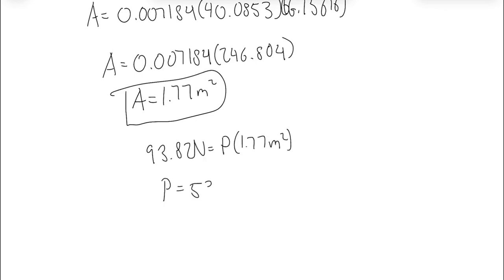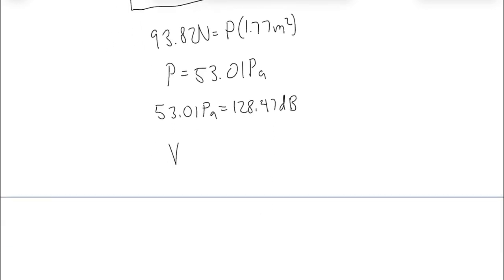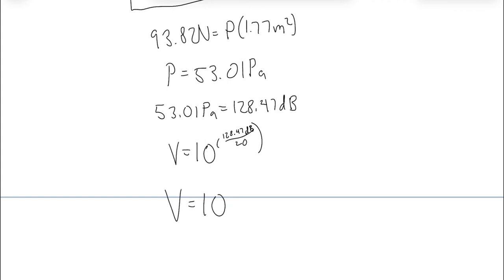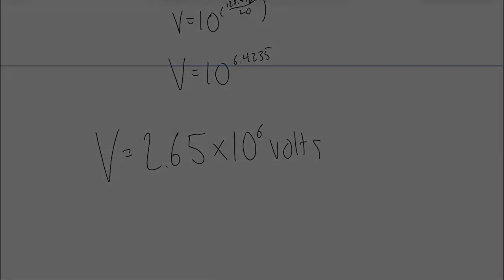Finally, we can find the voltage necessary to make that caliber of sound using the equation: voltage equals 10 to the power of the decibels over 20. After the calculations are finished, it can be seen that the amp uses 2.65 times 10 to the 6th volts of electricity in order to throw Marty across the room.